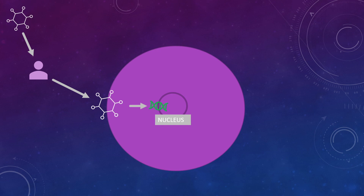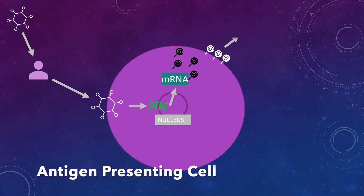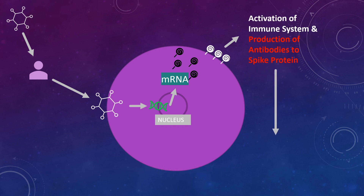The DNA from the vector is processed by the cell's machinery and the cell expresses the spike protein. Once the protein is presented on the outside of the cell — known as an antigen presenting cell — it is recognized by the immune system and stimulates a protective response that we call immunity.